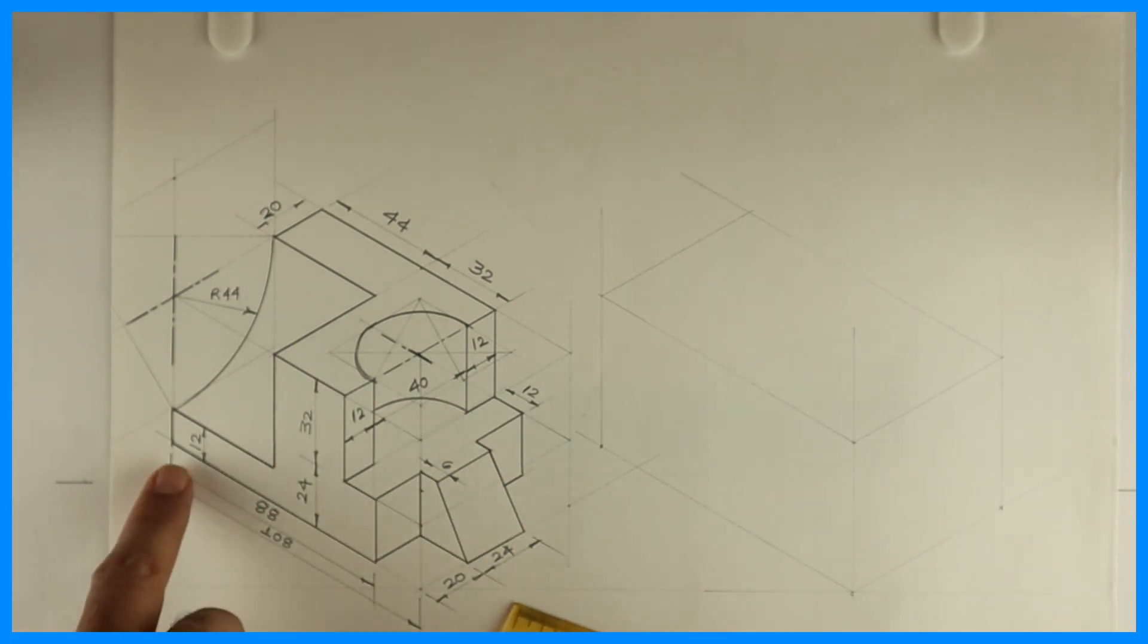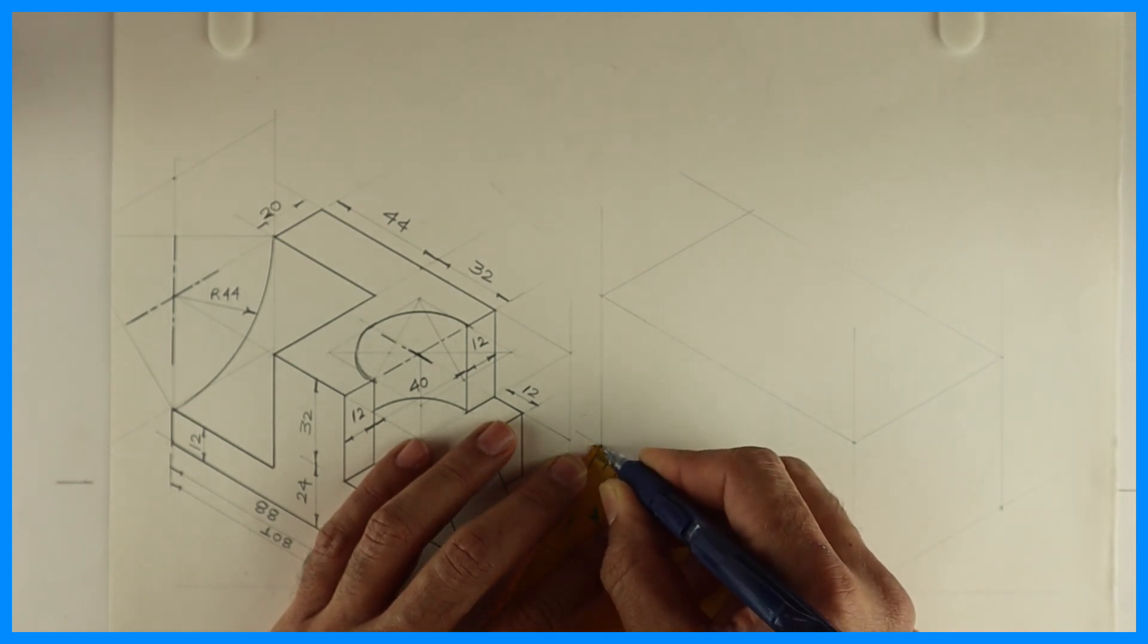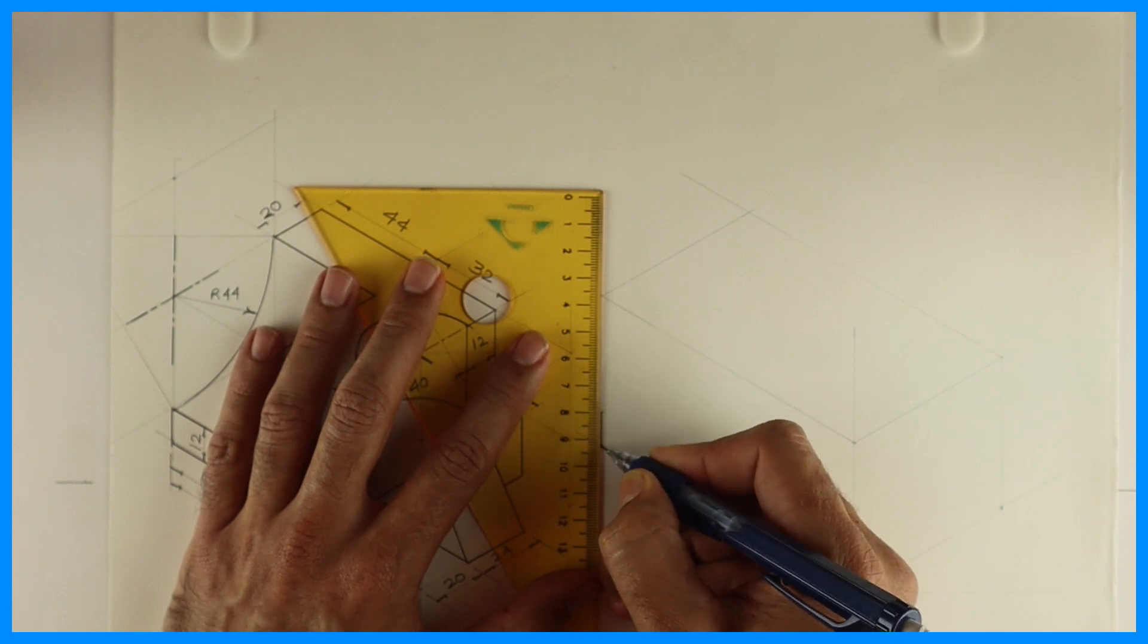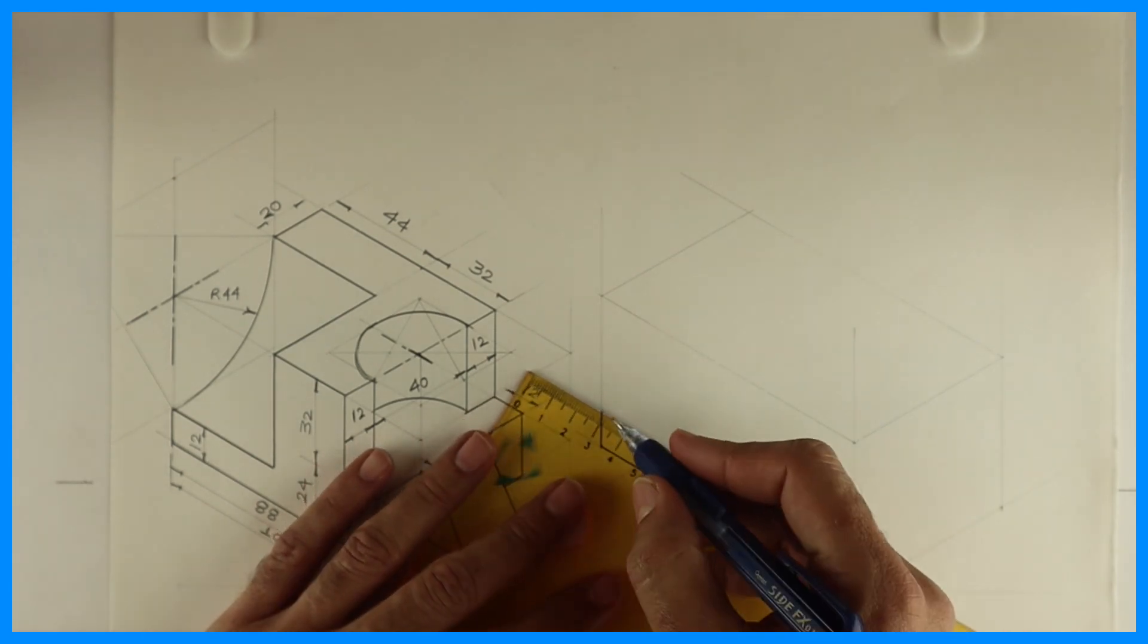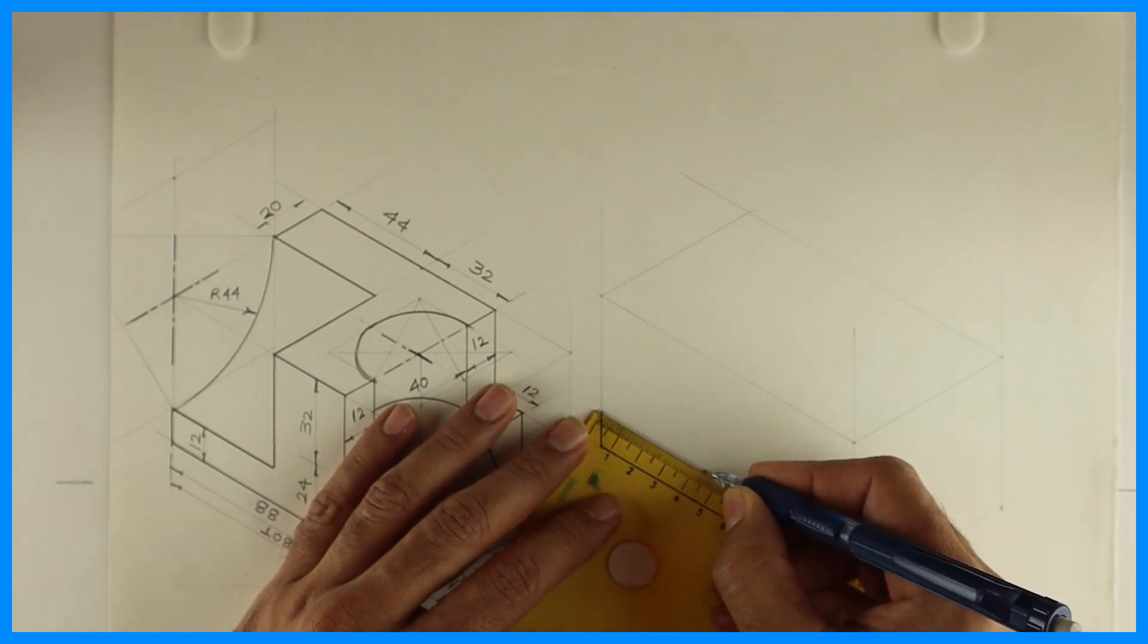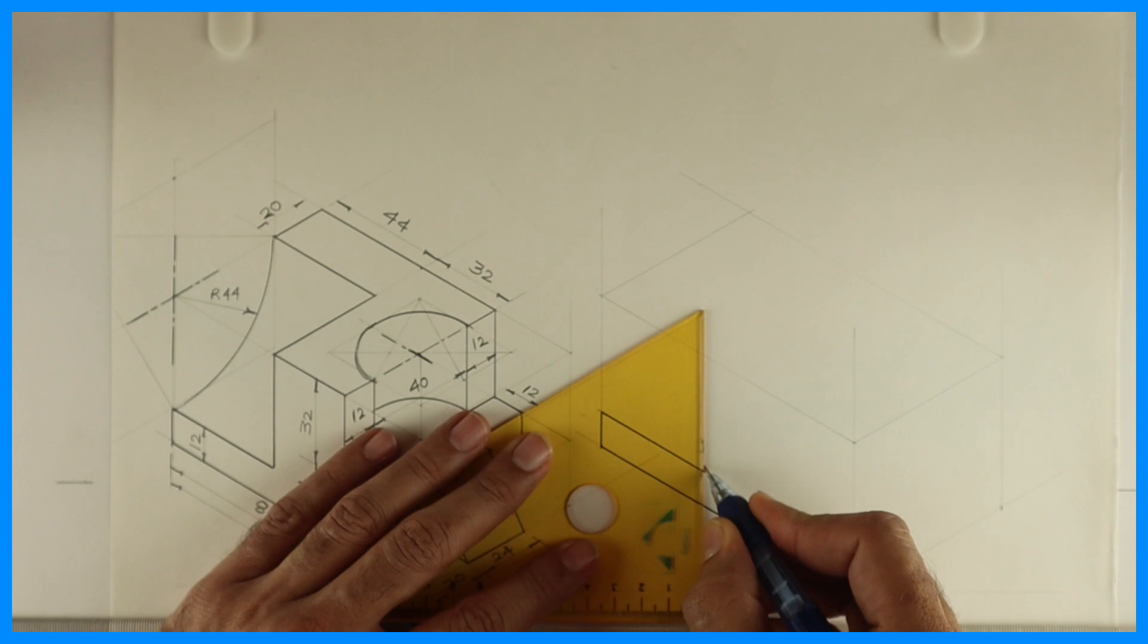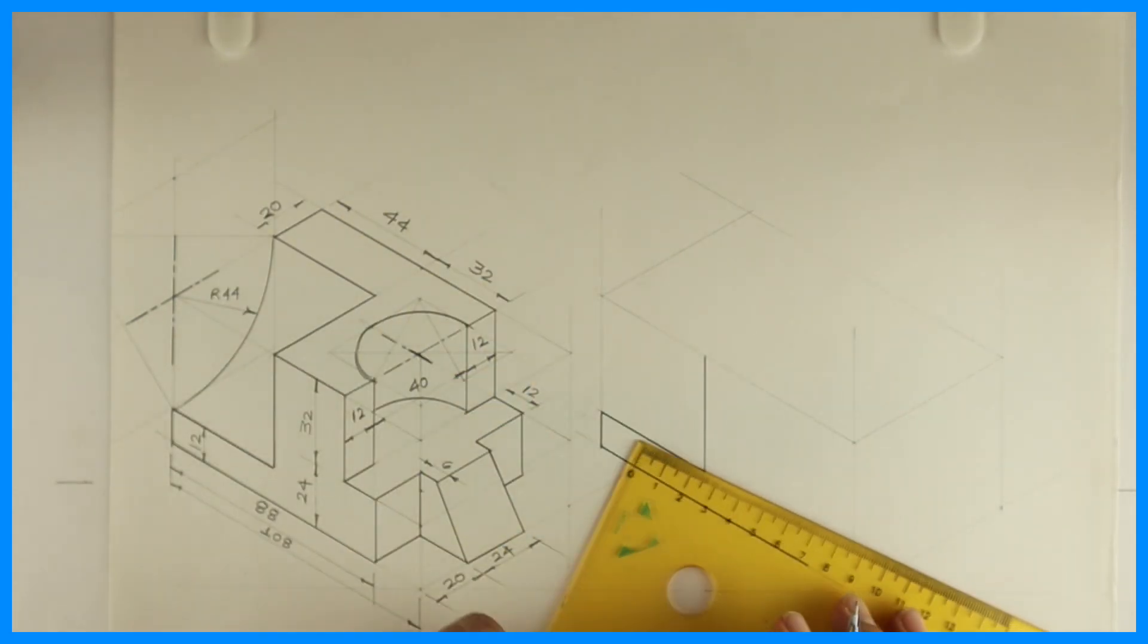We'll draw this part first. First you take 88. After that you take this height 12. Then you draw this line that is 44. After that vertical line, then again horizontal line of 32. See this.